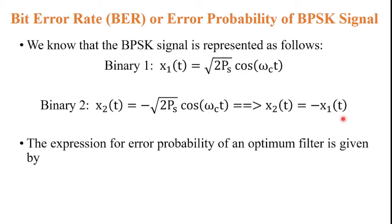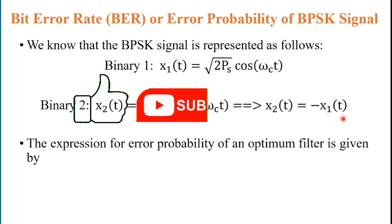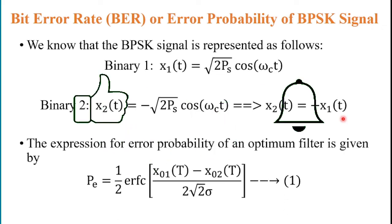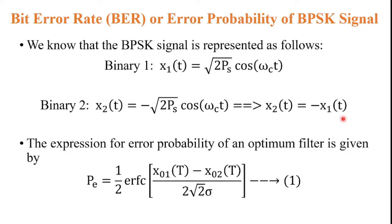We have to use a matched filter for the detection of the binary phase shift keying signal. The expression for error probability of an optimum filter is given by: Pe = (1/2) erfc[(x01(t) − x02(t)) / (2√2 σ)]. This is the equation of the error probability of an optimum filter, which we consider as equation 1.